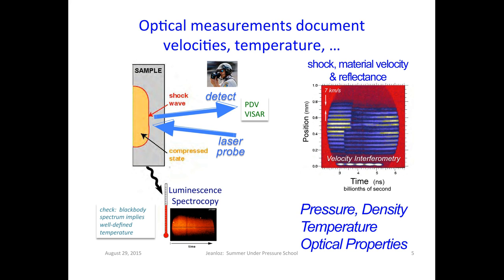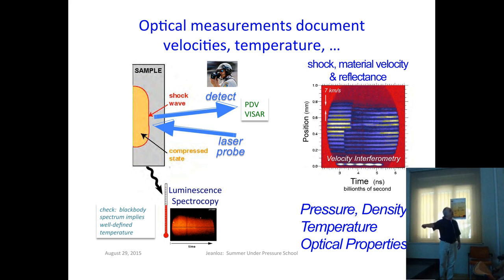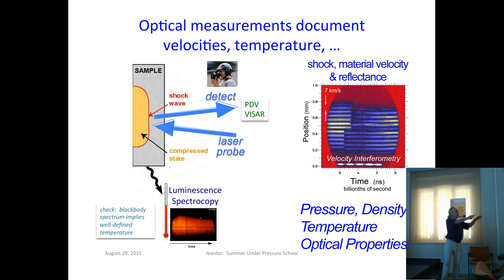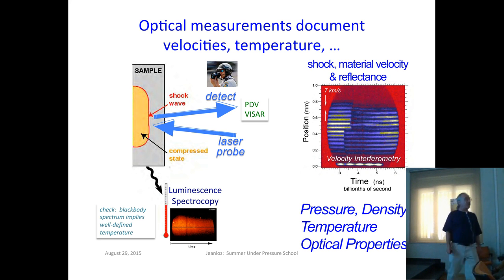This is an example of a VISAR record where we make observations over a few nanoseconds in time, and the fringe shifts imaged across the sample give us velocities in kilometers per second. In addition, we might measure the thermal luminescence from the sample — checking whether it is a blackbody spectrum as a function of time. We want to reassure ourselves that what we're measuring is a thermodynamic equilibrium state. In general, we can measure a meaningful temperature that follows a Planck-like spectrum modified by emissivity. We measure optical properties of the material at high pressures and temperatures; we can infer temperature from the blackbody or gray-body-like spectrum, and as you'll see, we can derive the density and pressure.